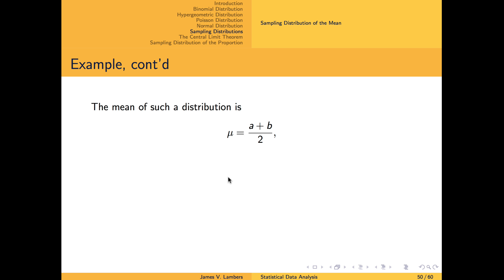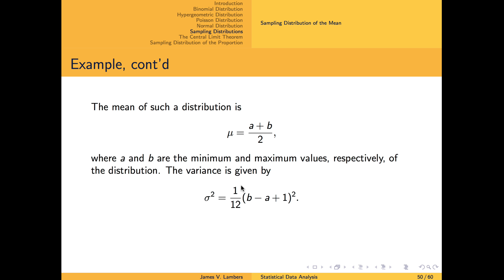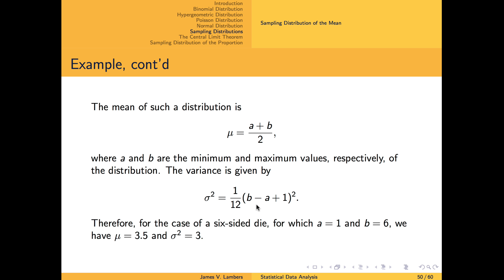For a discrete uniform distribution, we have formulas for the mean and variance in terms of the minimum and maximum possible outcomes, which are denoted here by A and B. In the case of a six-sided die, we therefore have a mean of 3.5 and a variance of 3.